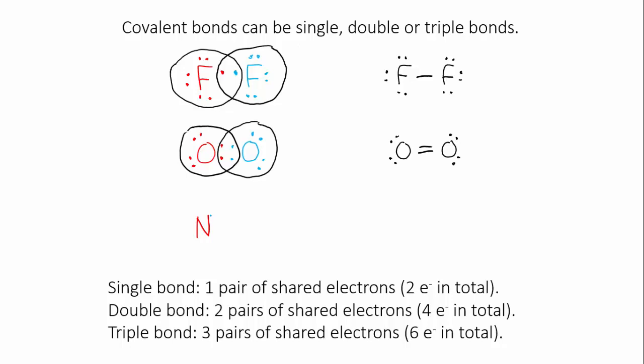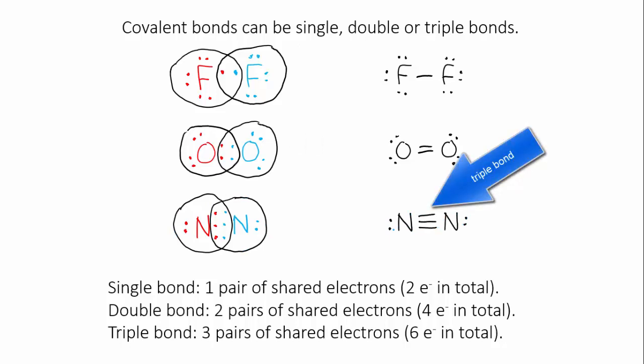Nitrogen has five valence electrons. It requires three more for a full outer shell. So in a similar fashion to the oxygen, it shares three electrons, which means the bond is made of three pairs of electrons. This is a triple bond, the strongest kind of covalent bond.